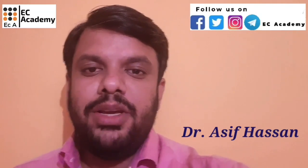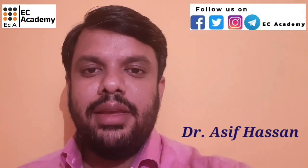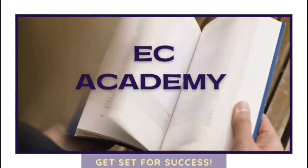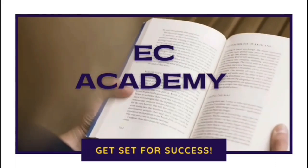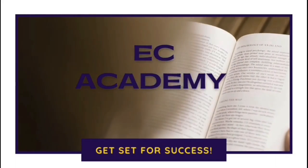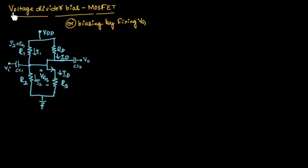Hello friends, welcome to EC Academy. In this lecture, let us understand voltage divider biasing of MOSFET, or biasing by fixing VG. Voltage divider biasing is also known as biasing by fixing VG.